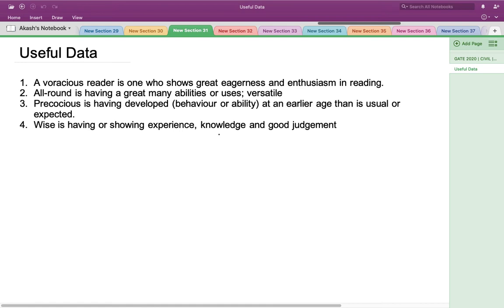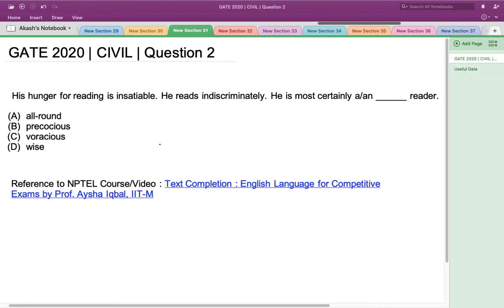In this context, the most accurate option would be option C, because the first part of the sentence states that his hunger for reading is insatiable, which means that he is never satisfied with reading something. So the most accurate option would be option C, which shows his eagerness and enthusiasm in reading.